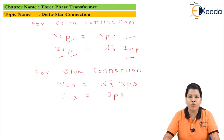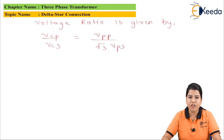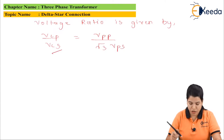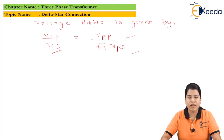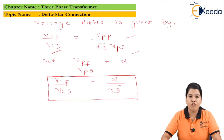If we want to calculate the voltage ratio and current ratio, the voltage ratio is given by: VLP divided by VLS equals VPP divided by root 3 times VPS. Since VPP divided by VPS equals alpha, we can modify this equation. Therefore, VLP divided by VLS equals alpha divided by root 3. This is the voltage ratio.